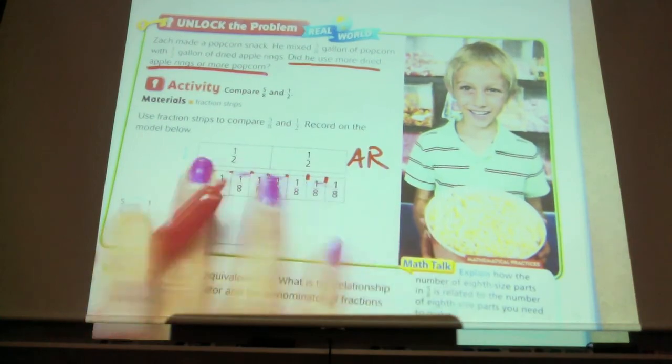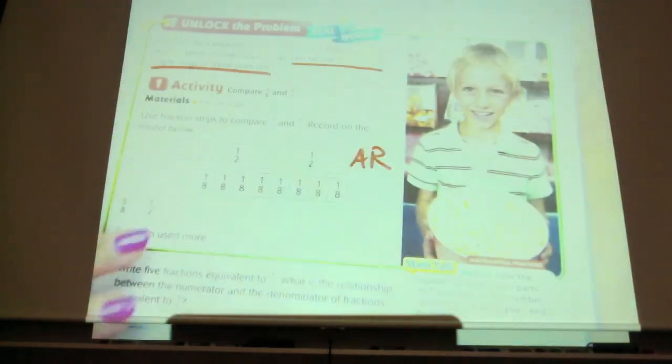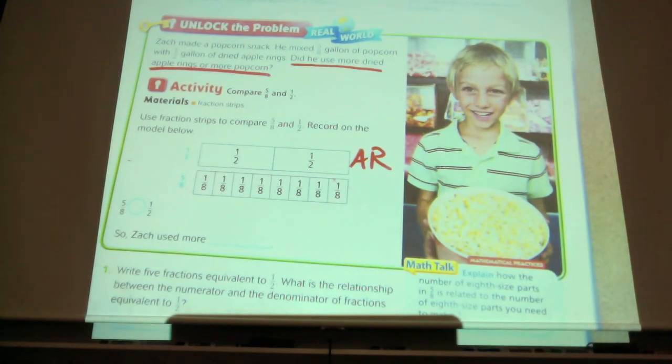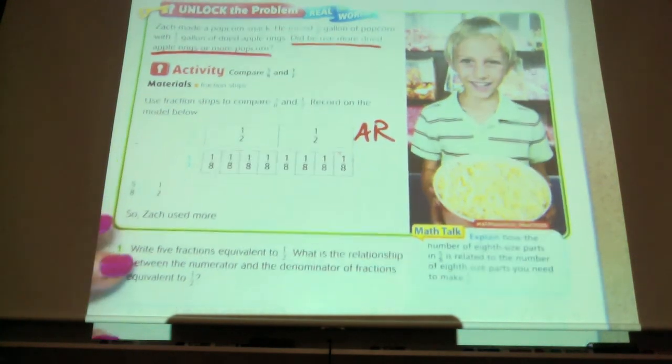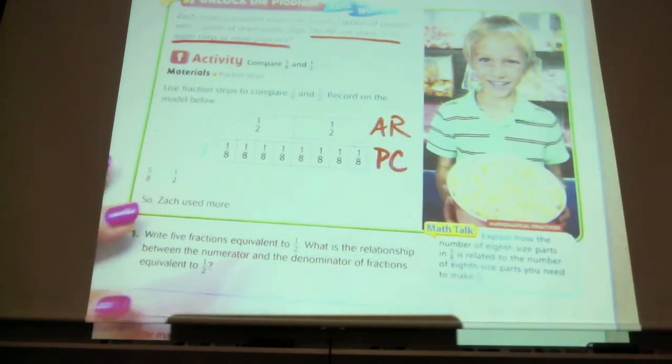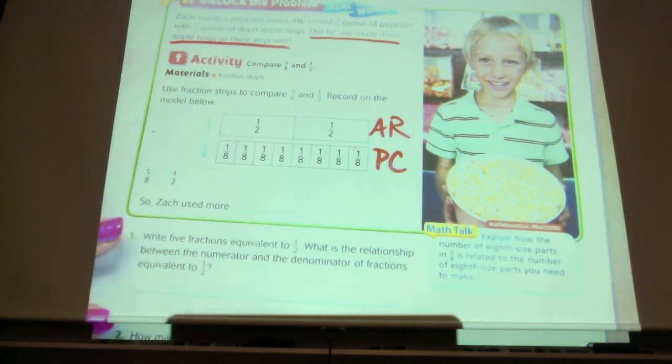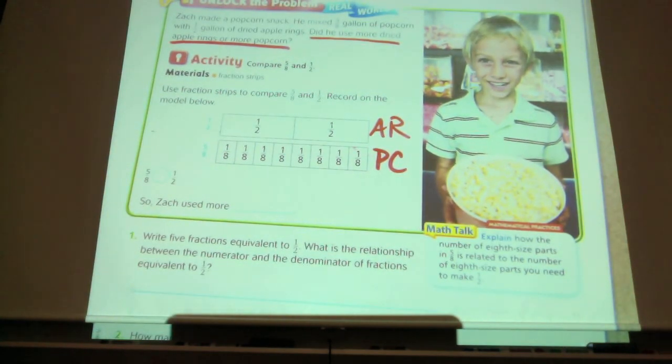So when you make an eighth, that's a good way to draw it and make it look nice. So they've done it into eights for the popcorn. And then how much of the dried apples, how many halves were there? What's the information I'm using?